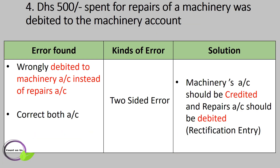Fourth one: 500 dirhams spent for repairs of machinery was debited to the machinery account. Here, instead of debiting to the repairs account, the amount was debited to the machinery account. So you should correct both accounts as it is a two-sided error. You have to pass a rectification entry that would credit the machinery account to cancel the wrongly debited amount, and debit the repairs account to add the spent amount.